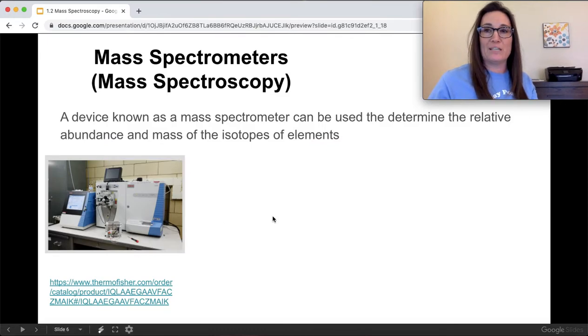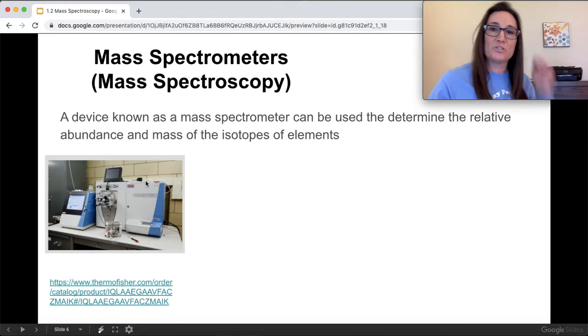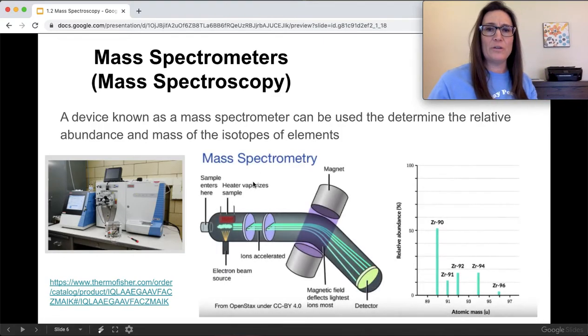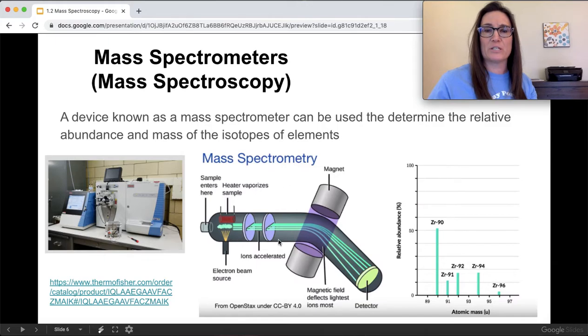Let's go over what a mass spec does first, and then we'll go over how they use that data to calculate the weighted average. It's a device that can find the relative abundance in the mass. This is just one from Thermo Fisher. You don't have to know how a mass spectrometer works unless you'd want to. I have it at the end of the video. But they put in the sample, it heats it, and it separates into the different isotopes.